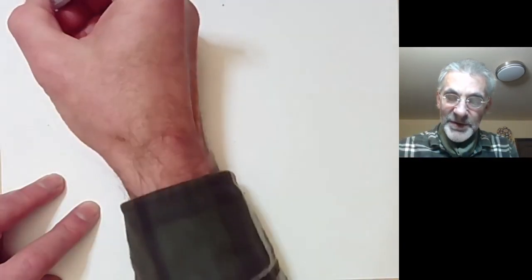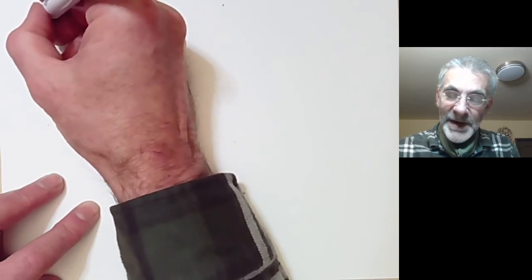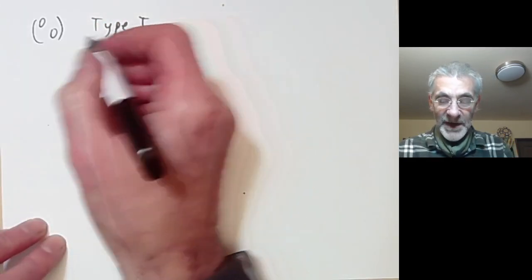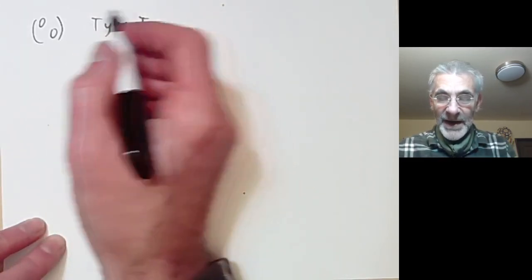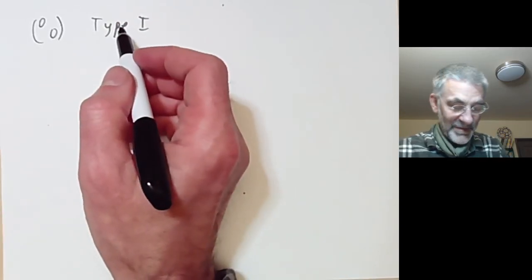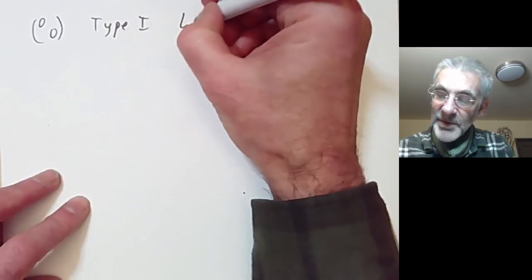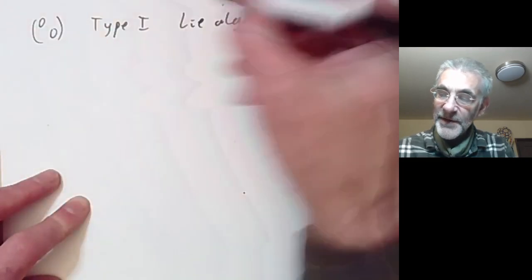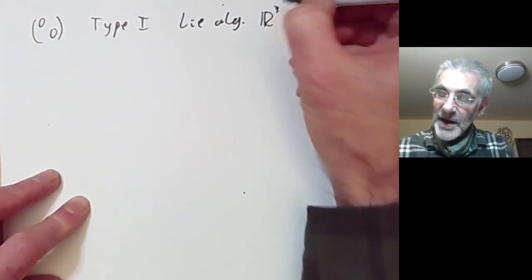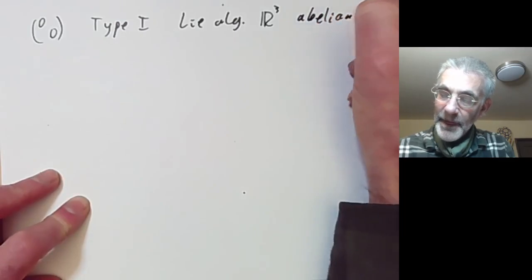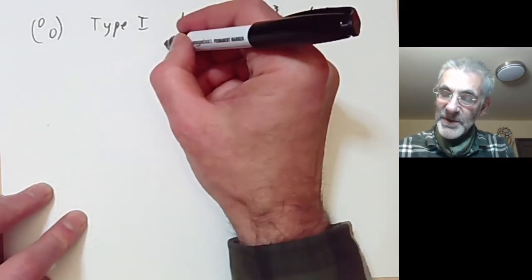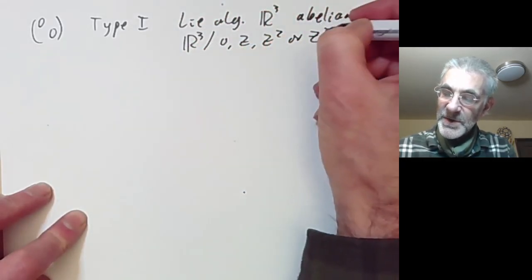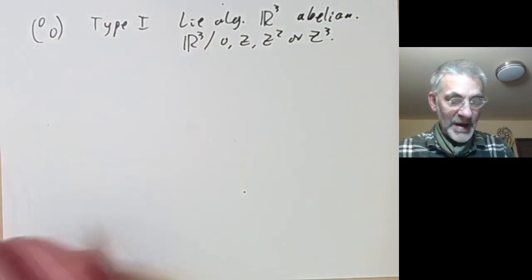When the matrix is zero, this is called Bianchi type 1. The Lie algebra is just the Abelian Lie algebra R³. The corresponding groups are R³ modulo 0, Z, Z², or Z³ — so we get four different groups.